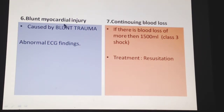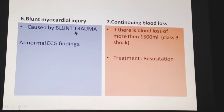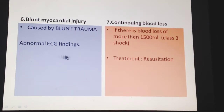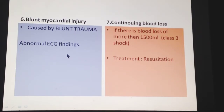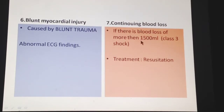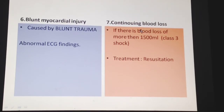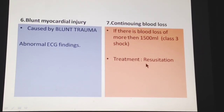Blunt myocardial injury is caused by blunt trauma and is identified by abnormal ECG findings. Regarding continuing blood loss, if blood loss exceeds 1500 ml this constitutes Class 3 shock, and the patient is managed with resuscitation.